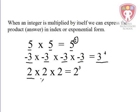And here we have 2 multiplied by itself 3 times. And instead of writing 8 as the answer, we can write it in indexed form as 2 raised to the power of 3.